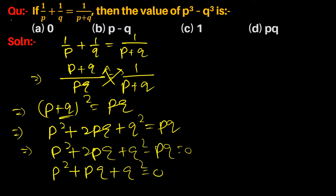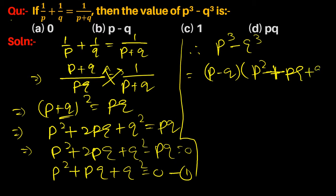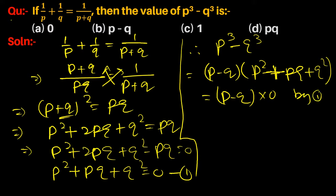This is equation 1: p² + pq + q² = 0. Therefore, p³ - q³ equals (p - q)(p² + pq + q²), which equals (p - q) × 0 by equation 1, so the answer is equal to 0.